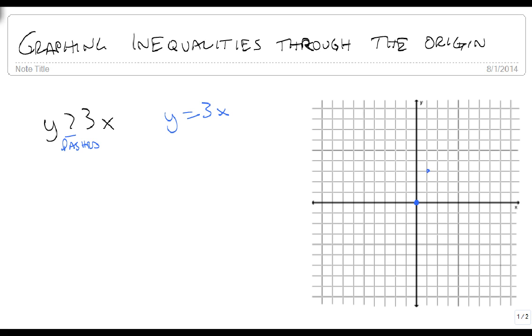We start at (0,0) and we go up 3 over 1, up 3 over 1, up 3 over 1, down 3 back 1, and then we can draw a dashed line through all these points.